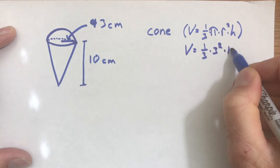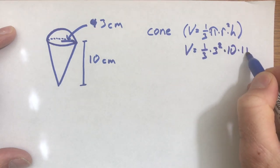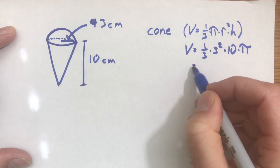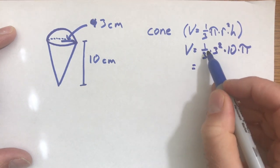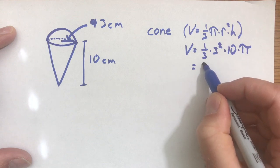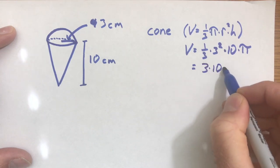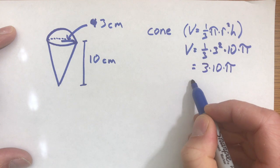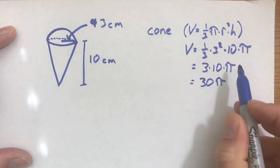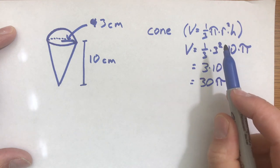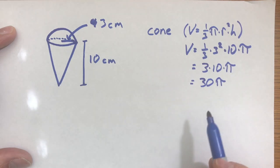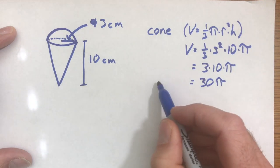So we have one-third times our radius squared, three squared, times ten times pi, which is just moving the pi to the end. And then we'll do all of this math. So one-third times nine is three times ten times pi, so this is just going to be thirty pi. Nine times one-third is like nine divided by three, that's three times ten, thirty pi. So the volume of the cone is thirty pi.